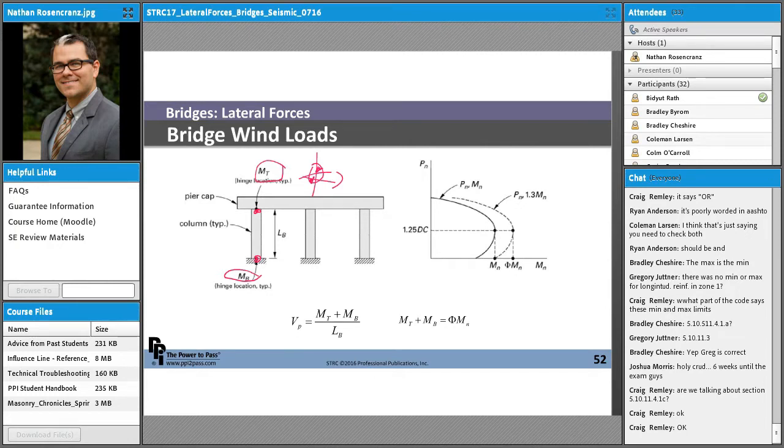So basically you take this column. And then this column is going to have a calculated MN value or it will have an associated PM diagram. Because your MN is actually going to vary based on your axial. Your moment capacity and your axial capacity are related.